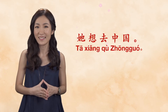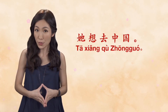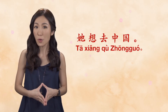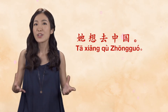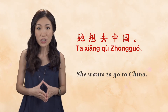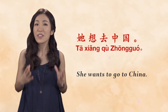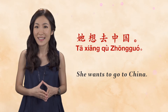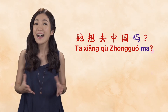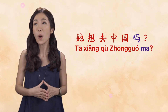Number two: 她想去中国 — 'she wants to go to China.' The correct question is 她想去中国吗? — 'Does she want to go to China?'